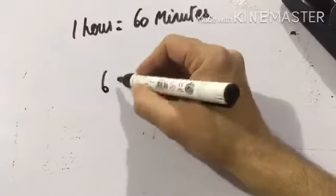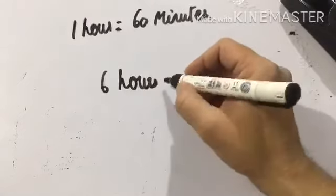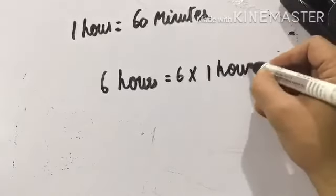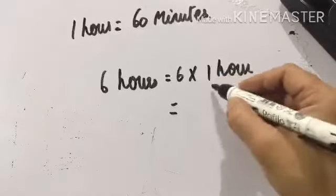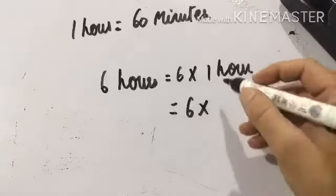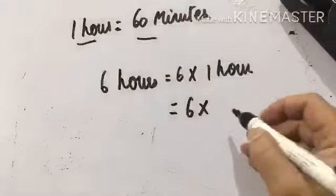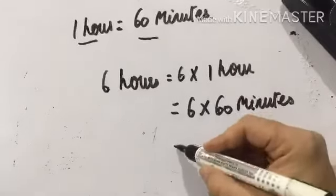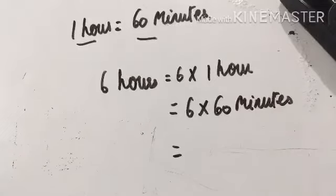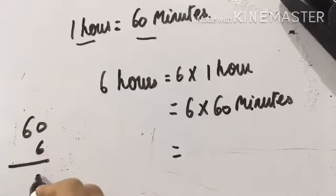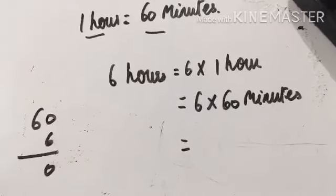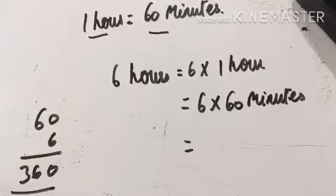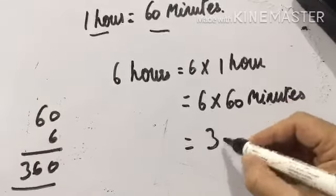If you are given the question: six hours is equal to how many minutes? We write six hours as six into one hour, and then substitute: one hour is equal to 60 minutes. So six into 60 — six zeros are zero, and six sixes are thirty-six — that gives us 360 minutes.